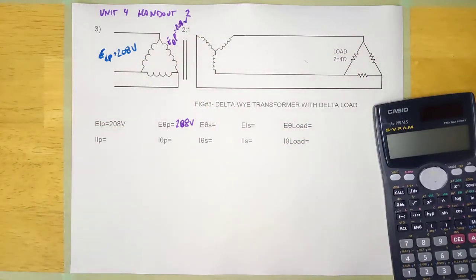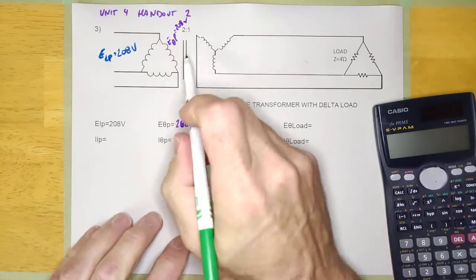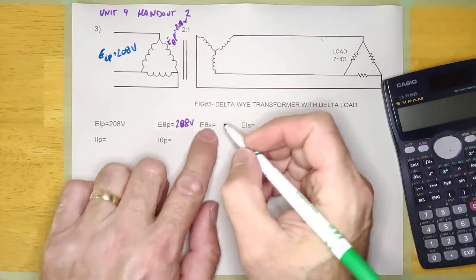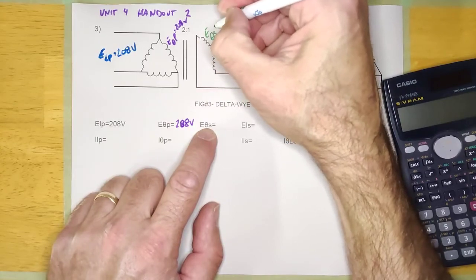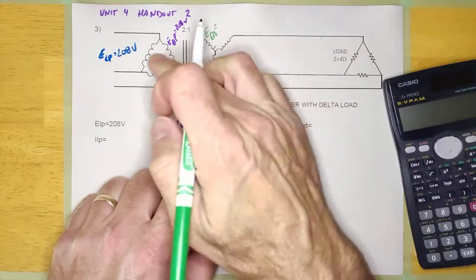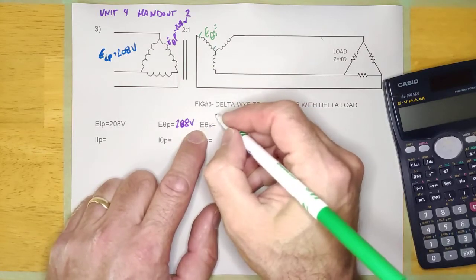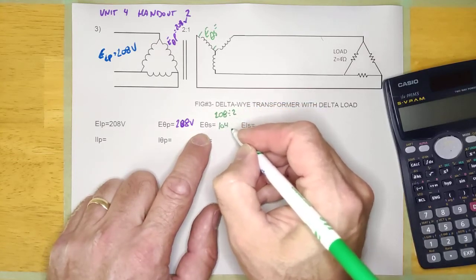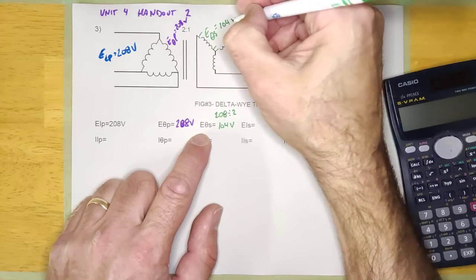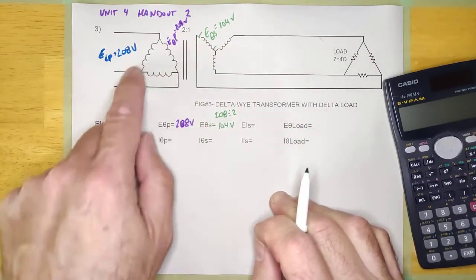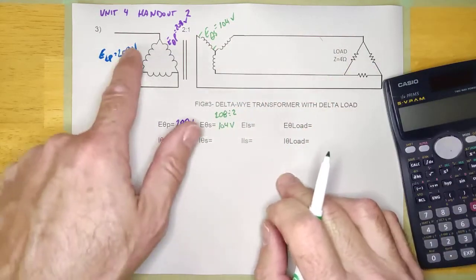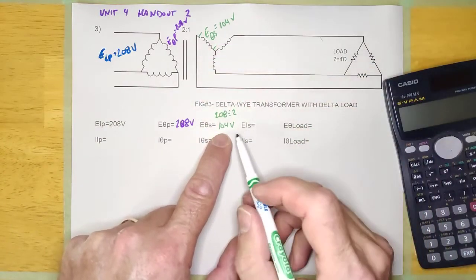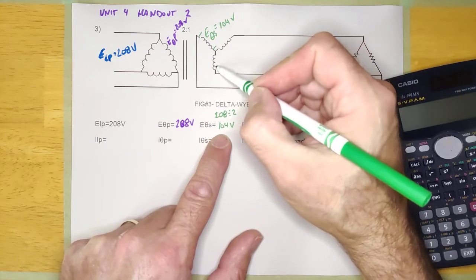Now we're going to go across the transformer. The ratio is 2 to 1, it's going to be step down. So E-phase secondary — measuring from there to there — since it's 2 to 1, I'm going to divide by 2. So this is going to be 208 divided by 2, and that's going to be 104 volts. I'm putting it in the table but also writing it right on the transformer itself — that makes it a little easier to follow.